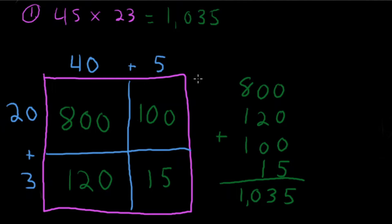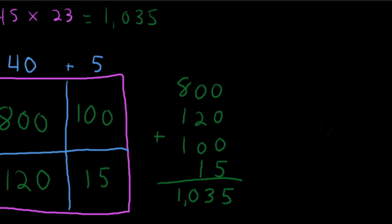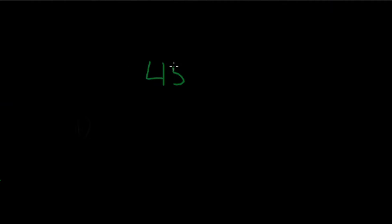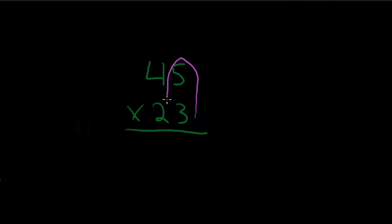If you got this one correct, start challenging yourself to solve it using standard algorithm. Let's try it with the same problem — 45 times 23 — and see if we get the same answer. Here we go: multiply the ones places. 3 times 5 is 15.